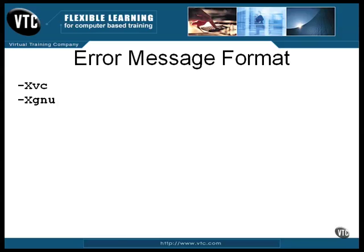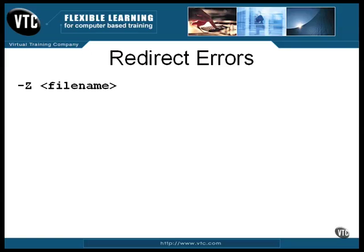The two formats are very similar, and they both contain the same information. NASM normally sends error messages to standard error for display. Under DOS and Windows, it's difficult to redirect standard error to a file, but you can have the assembler do it for you with the uppercase Z option, which allows you to specify the name of a file that will receive all the error messages.